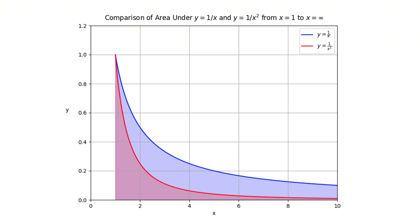Mathematics often delivers surprises, even in seemingly simple problems. Consider the areas under the curve y equals 1 over x and y equals 1 over x squared from x equals 1 to infinity. Both functions decrease as x increases, and at first glance, one might expect their infinite integrals to behave similarly.